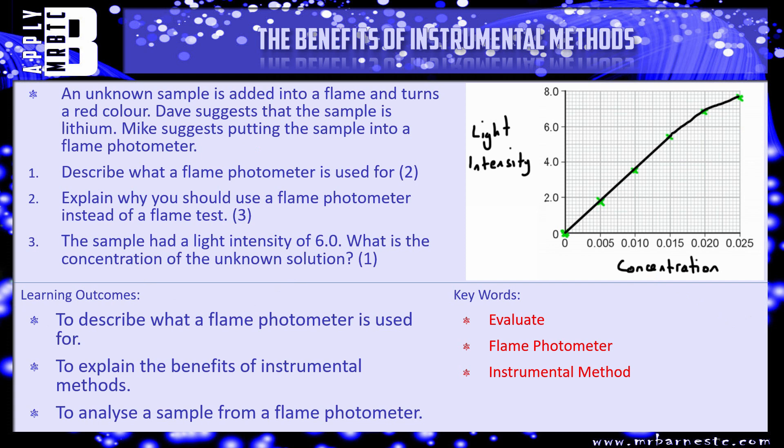So what can the examiner ask you on this? Well let's have a look at a few questions. An unknown sample is added to a flame and it turns a red colour. Dave suggests that the sample is lithium. Mike suggests putting the sample into a flame photometer. So question one, describe what a flame photometer is used for. There are two things we talked about in the video. Have a think through, write them down.